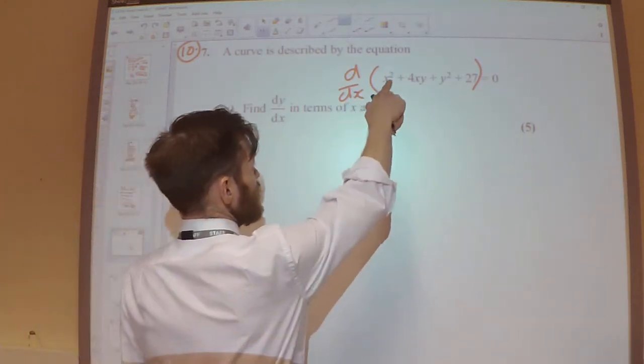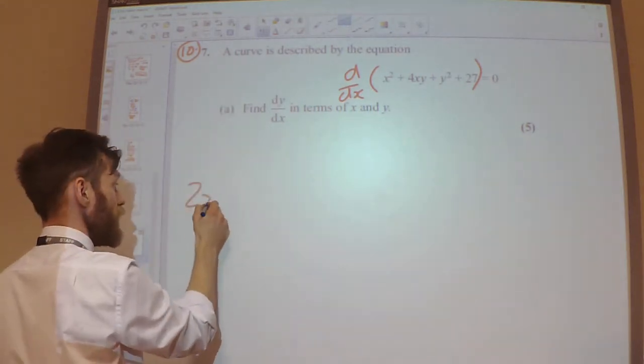Right, okay. Differentiating x squared, that's nice and easy. Get 2x.